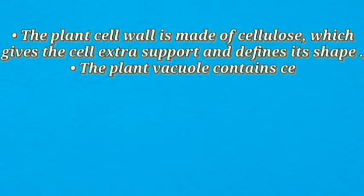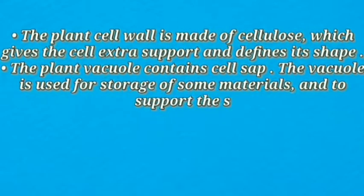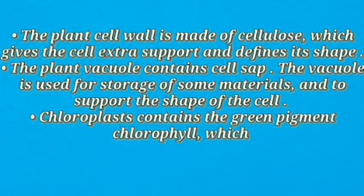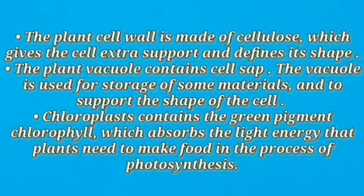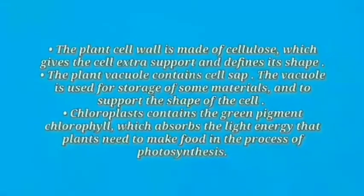If there is not enough cell sap in the vacuole, the whole plant may wilt. Chloroplasts contain the green pigment chlorophyll that absorbs the light energy used in the process of photosynthesis to make food.